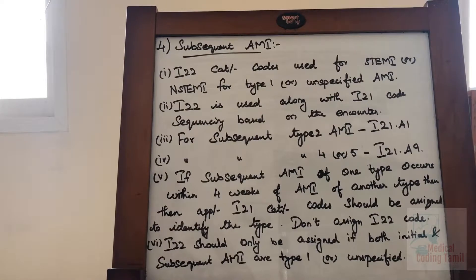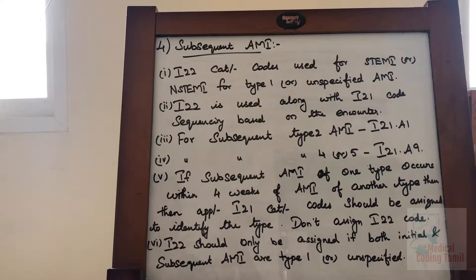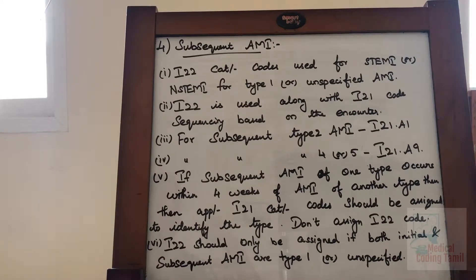The next topic is subsequent AMI. Subsequent AMI is one that follows a main Acute Myocardial Infarction. I22 category codes are used for STEMI and non-STEMI for type 1 or unspecified AMI. I22 category codes can be used along with I21 category codes, but the sequencing is based on the encounter or admission of the patient. For subsequent type 2 AMI, we have to assign I21.A1 code.